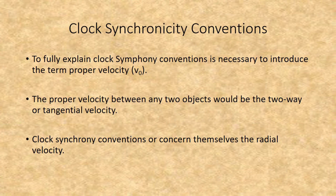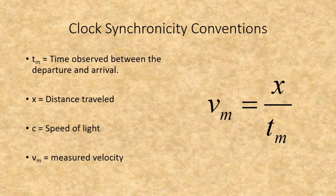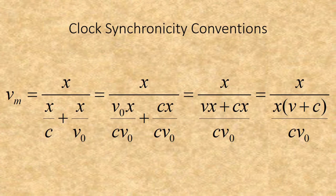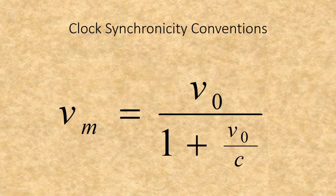Each convention makes an assumption about the one-way speed of light within certain constraints. To fully explain clock-synchrony conventions, it is necessary to introduce the term 'proper velocity' — the two-way or tangential velocity between any two objects. Clock-synchrony conventions concern themselves with radial velocity. If you have a spacecraft heading out from Earth, the time observed between departure and arrival will be the distance divided by the proper velocity, plus the distance divided by the speed of light. The measured velocity will be x divided by t_m, which through substitution gives us the measured velocity as the proper velocity over 1 plus the proper velocity divided by the speed of light.